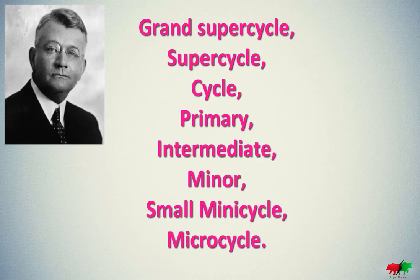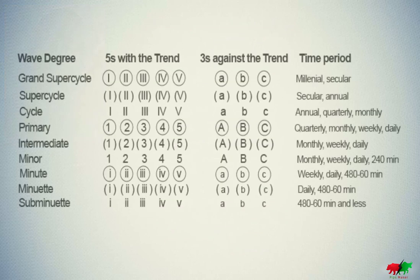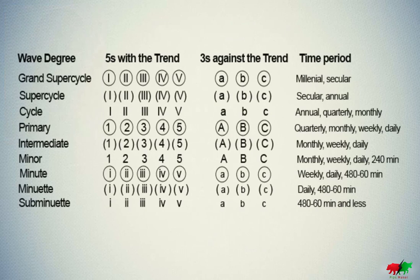When we use numbers and letters, Elliott advised to use the scheme of marking the waves that you see below. But the current system of marking is not as effective as before. Currently, we can define more degrees than Elliott had foreseen.